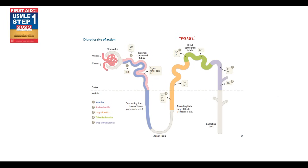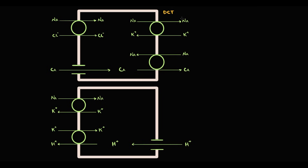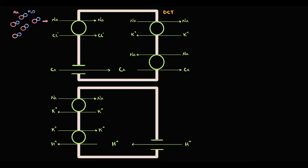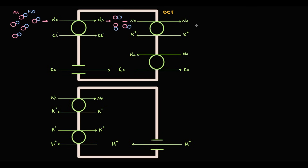Thiazide diuretics act on the distal convoluted tubule. To explain their mechanism of action, we first have to recall the physiology of the distal convoluted tubule. Fluid that enters the distal convoluted tubule has a lot of sodium molecules. Because sodium is osmotically active, it attracts water, so water molecules always accompany sodium molecules. Located in the distal convoluted tubule is the sodium chloride cotransporter, whose major function is to provide reabsorption of sodium molecules. Water moves together with sodium into the cell, and we transport them into the blood via the sodium-potassium exchanger.